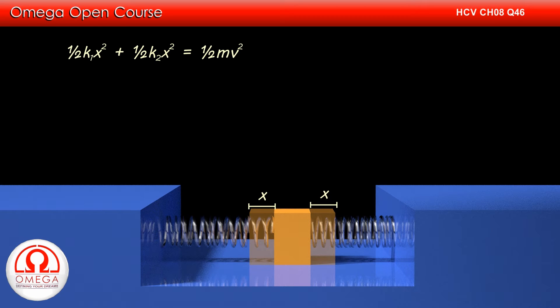When the block reaches the mean position, the elongation or compression of the springs is zero and hence there is no potential energy in the springs. All the potential energy of the springs is converted to the kinetic energy of the block.